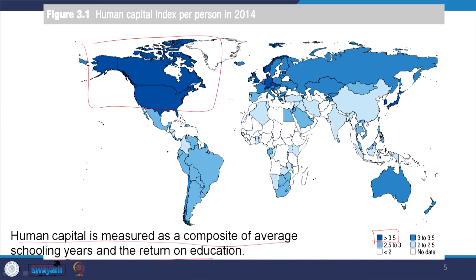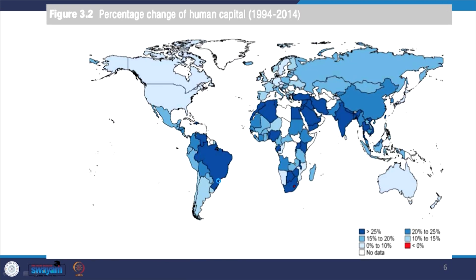Based on 2014 official figures for human capital index per person, countries with dark blue shading have an index greater than 3.5. Countries poised with high physical capital could spend hugely on human capital and therefore see better returns. India, China, and other emerging economies rank second highest. Human capital is clearly one of the important factors behind changes in the export and import function.